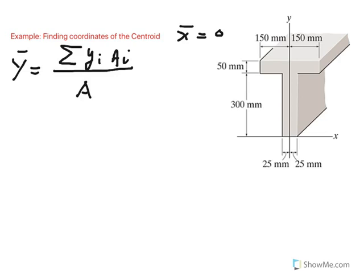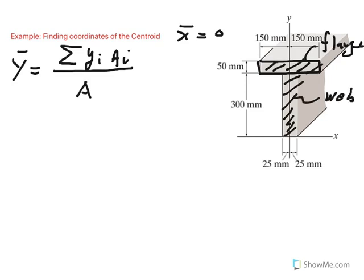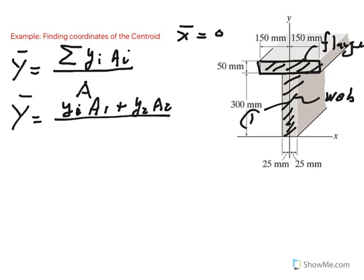Since we have basically two pieces, take this beam cross section and break it into a flange, which is 300 by 50 millimeters, and the other piece is this rectangle, which we call the web of the beam. If we expand this, first moment of area is the distance times the area, y-1 times a-1 plus y-2 times a-2, so the web is one and flange is two, divided by total area.